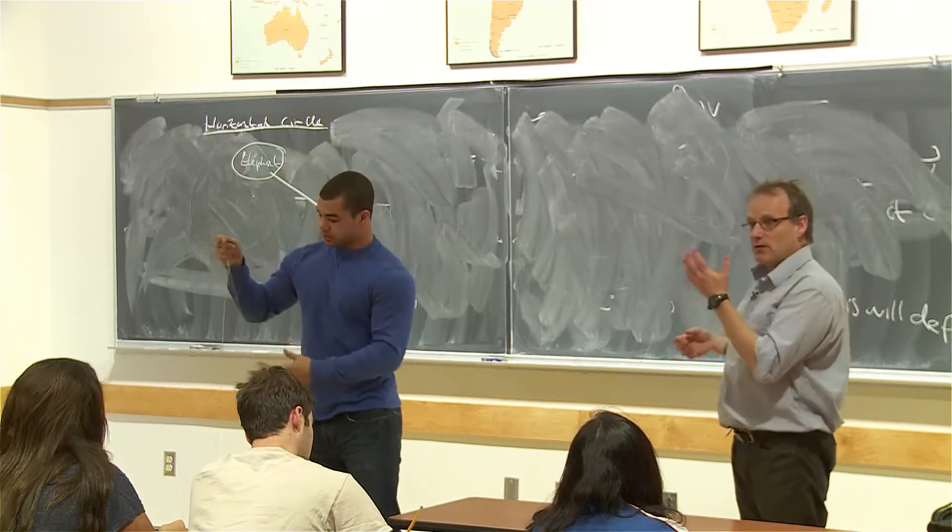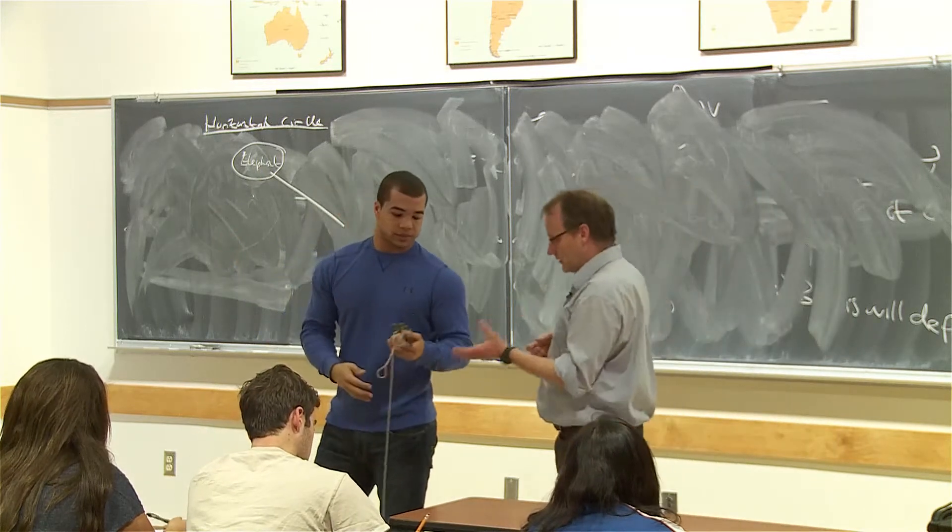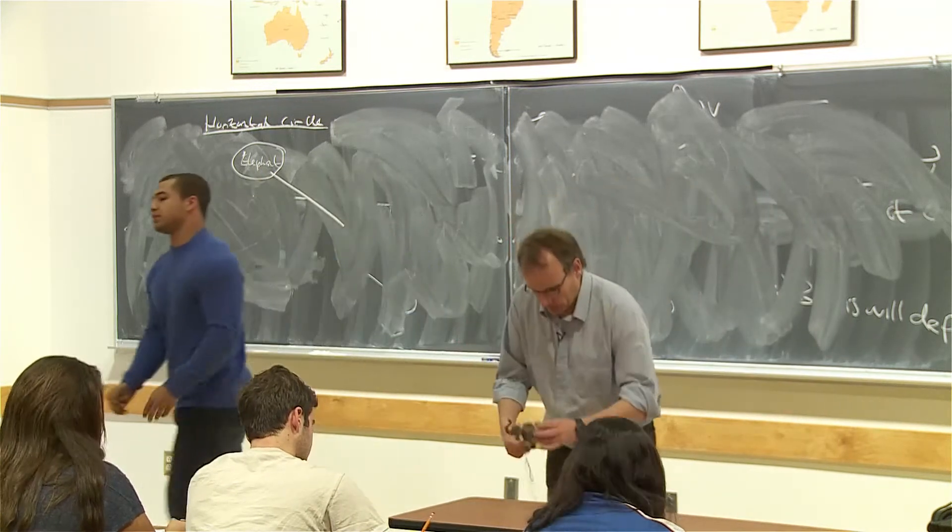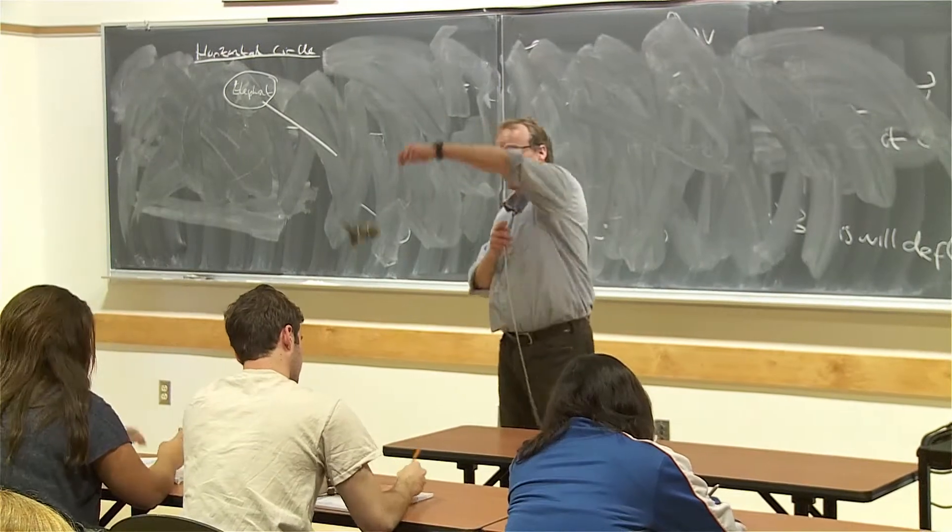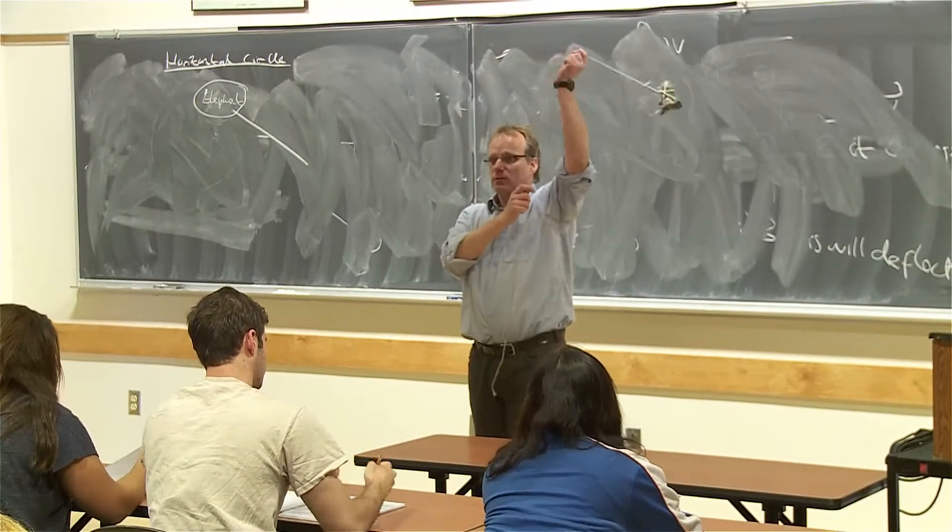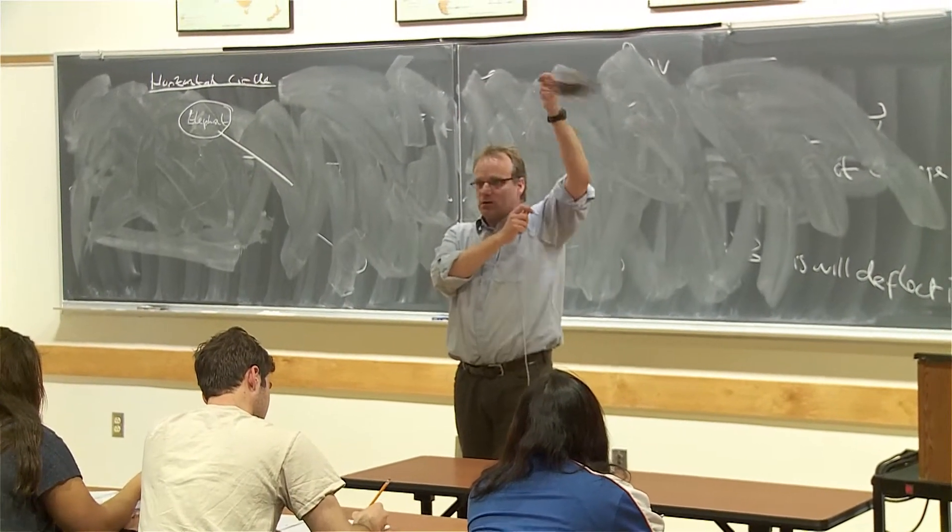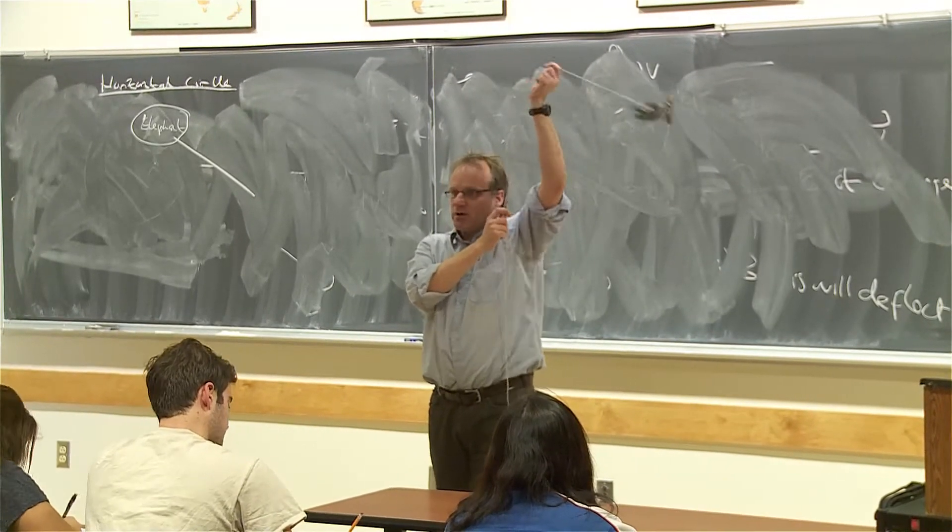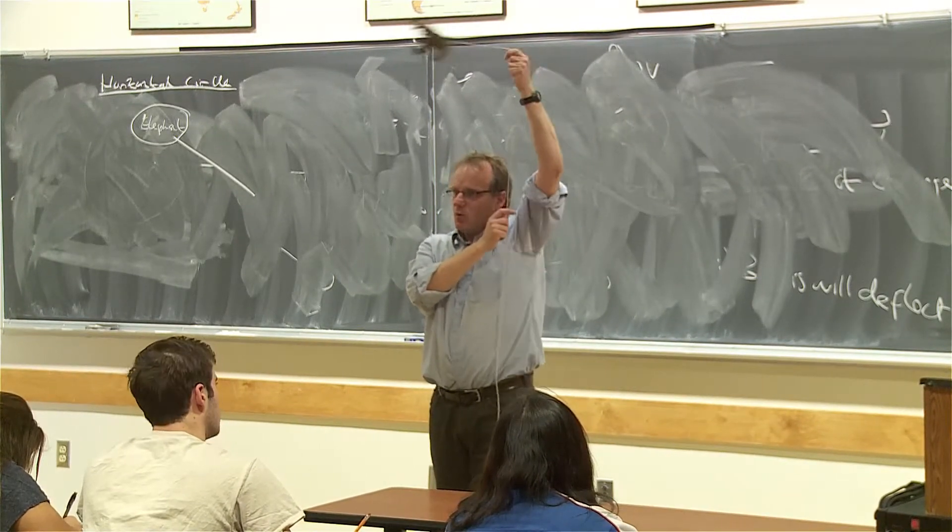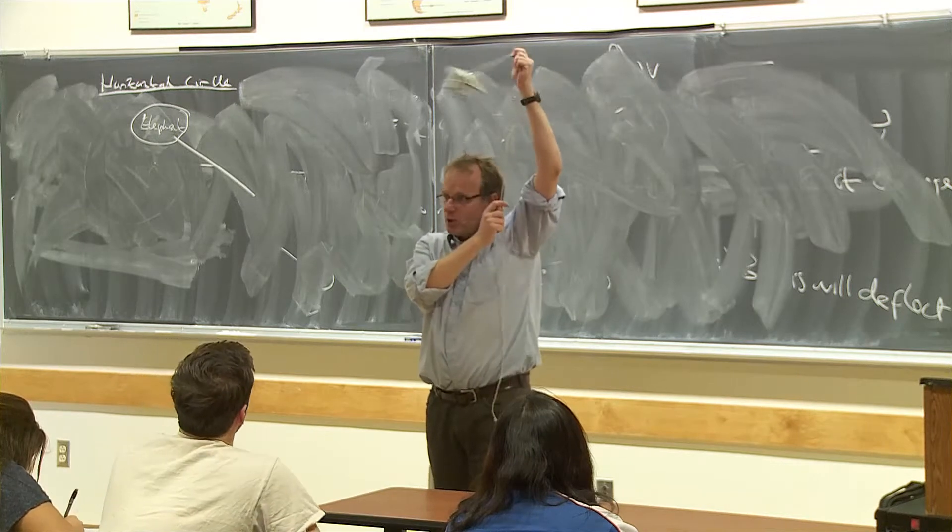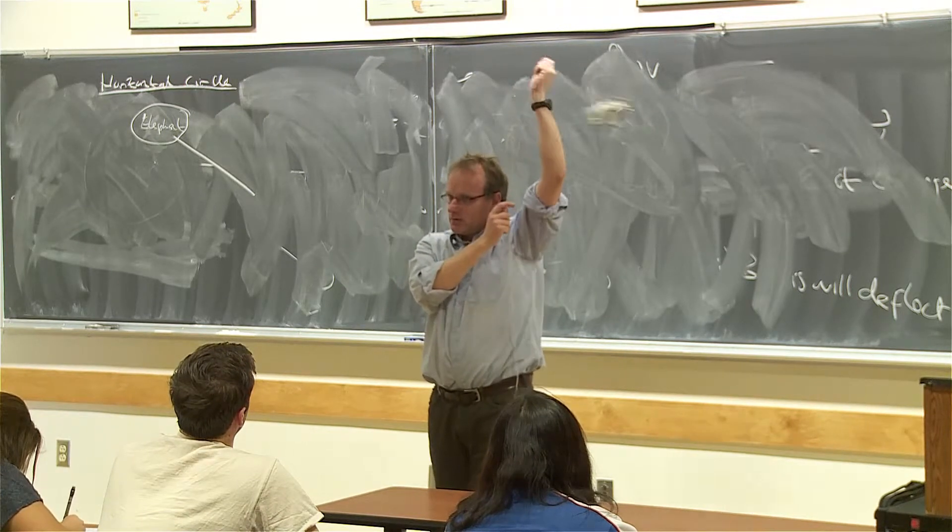So the elephant feels you pulling on it and that's what we call tension. Thanks. So the elephant feels that Deshawn is pulling on it. I can't feel that. I can only feel it pulling on me. But that's not what's making it go in a circle.